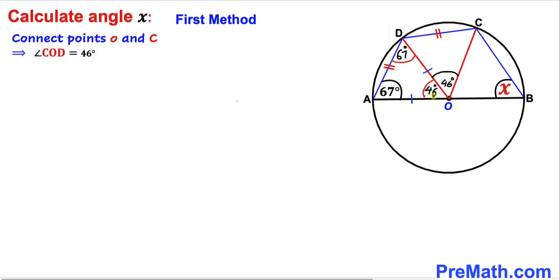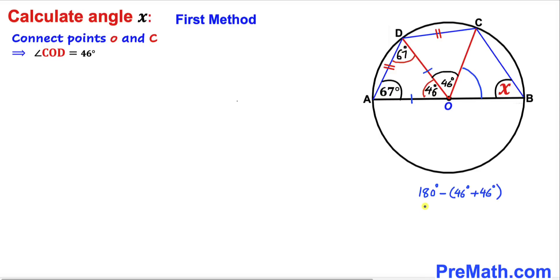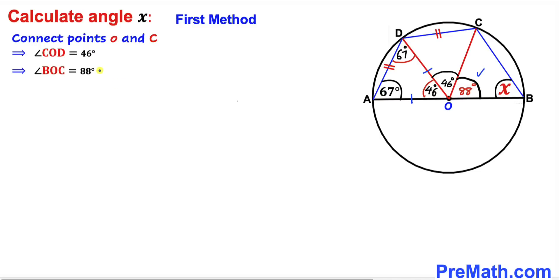Now let's recall the straight angle property — a straight angle is 180 degrees. We know angle AOD is 46 degrees and angle COD is 46 degrees. So angle BOC equals 180 − (46 + 46) = 180 − 92 = 88 degrees. Therefore angle BOC turns out to be 88 degrees.